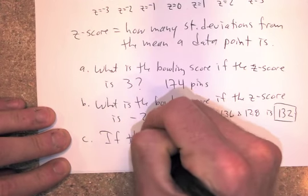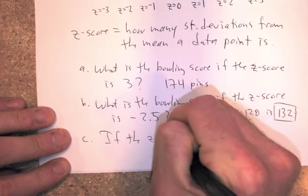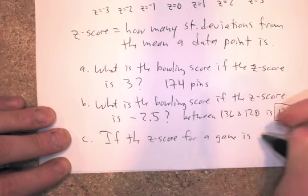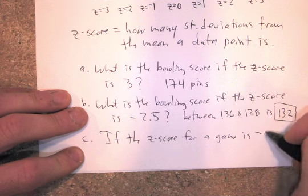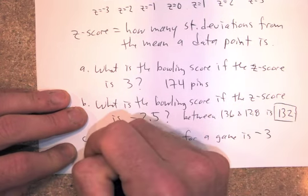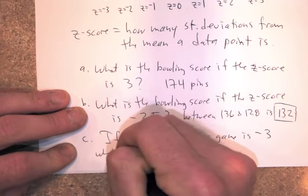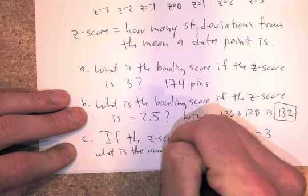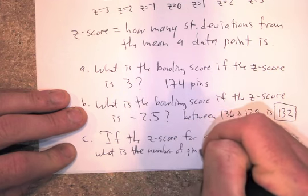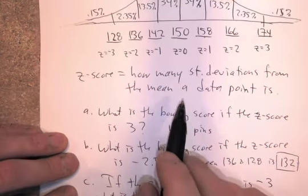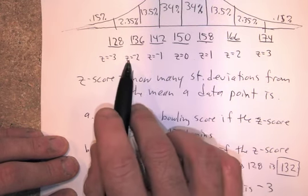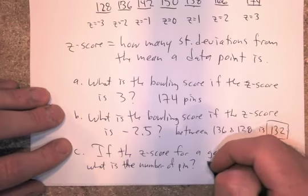If the z-score for a game is negative three, what is the number of pins? Or what's the score that that person got if their z-score is negative three? Again, just look up here. One, two, three. Negative, I mean, it's right here. Negative three is the score of 128 pins.